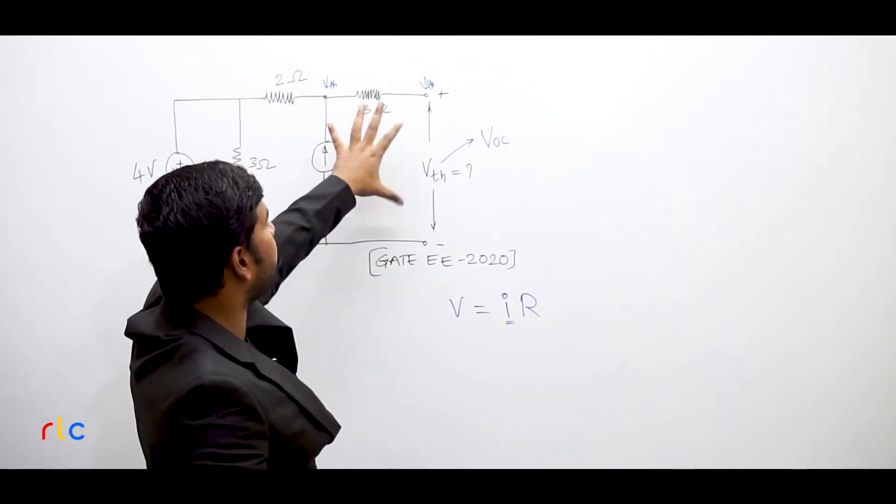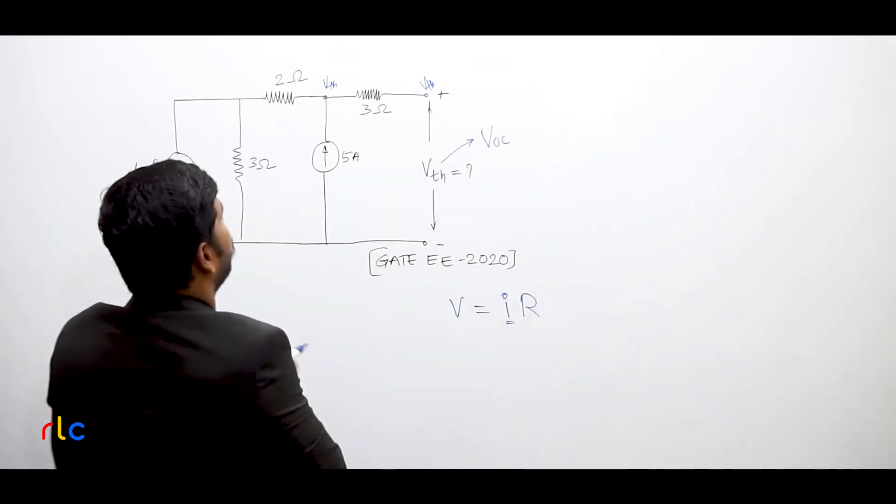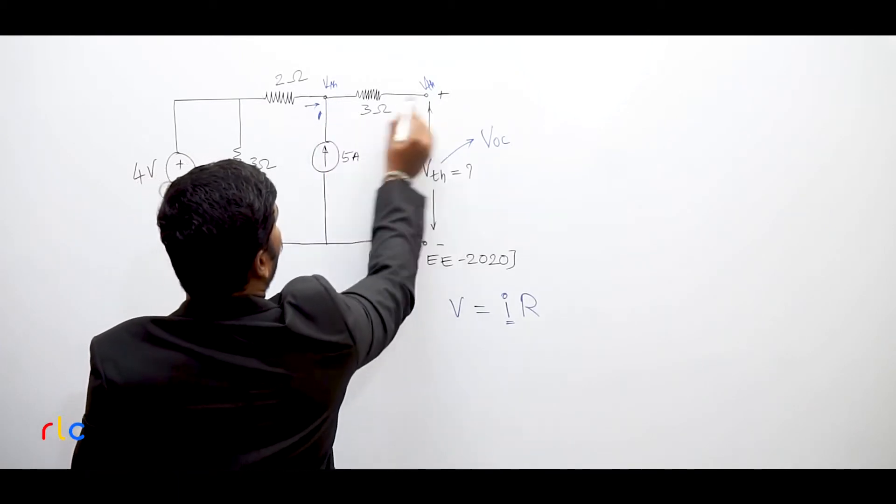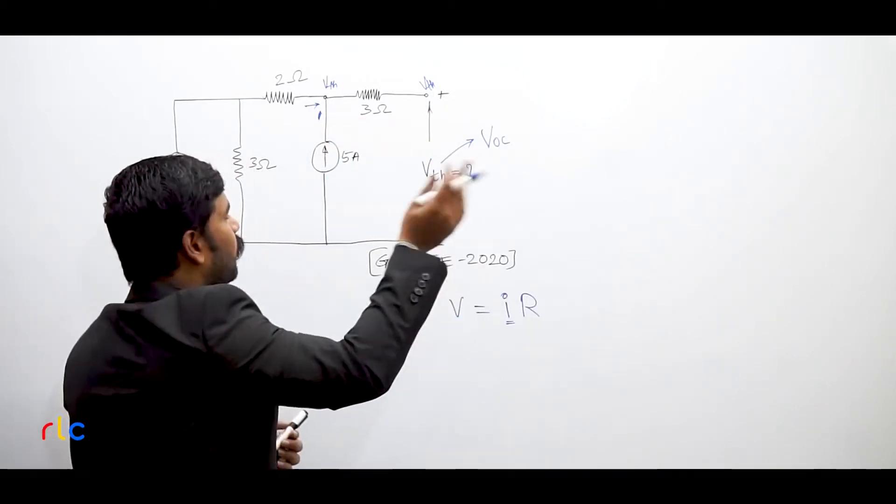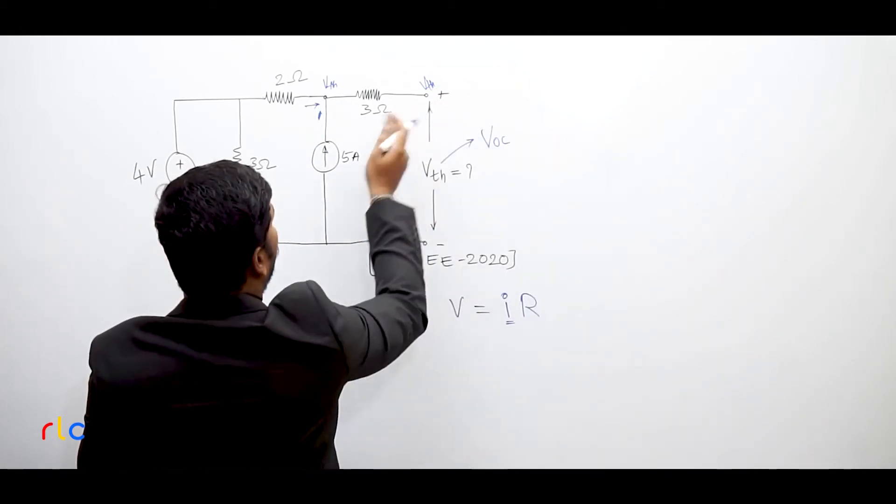But if you look at this circuit here, this branch belongs to the open. If you are sending some current from this side or from here, do you think some current will go into this 3 Ohm resistor part? No. Why? Because if it enters into 3 Ohm, it will go nowhere because it is an open path.